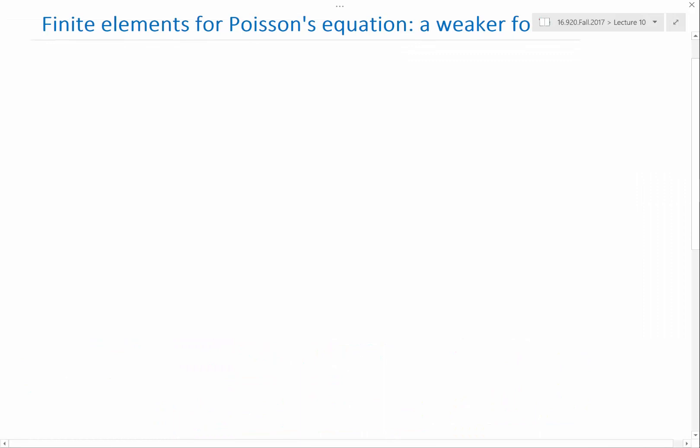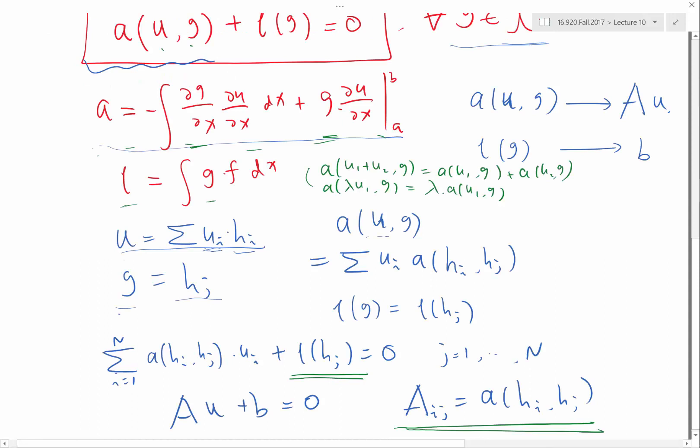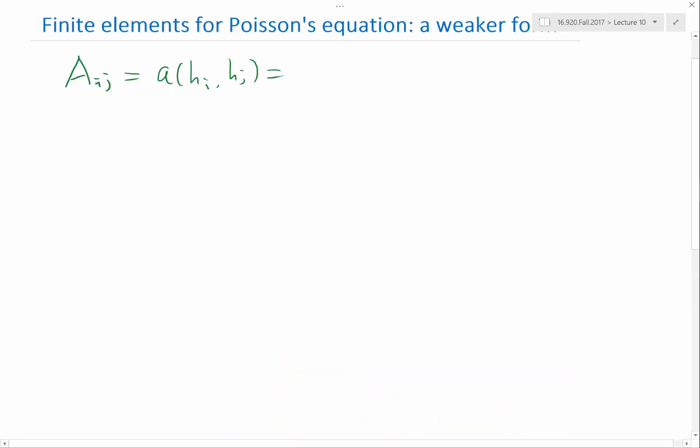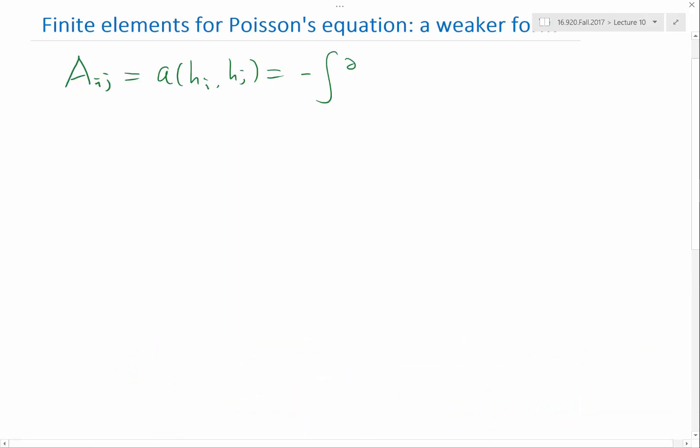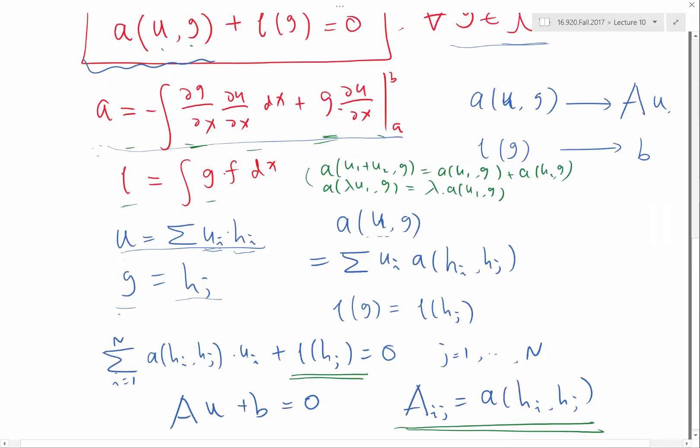As we can see, the only two things we need to compute is this aij and L of H. So let's do some additional thinking about what they are going to be. So aij is equal to my a of hi hj. And that is, let's go back to this definition of a.